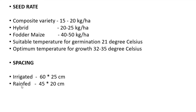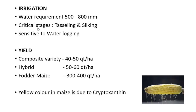Critical stages for irrigation are tasseling and silking — these critical stages also apply for nutrient requirement. Maize is sensitive to waterlogging. Yield: for composite variety, 40 to 50 quintals per hectare; for hybrid, 50 to 60 quintals per hectare; for fodder maize, 300 to 400 quintals per hectare.